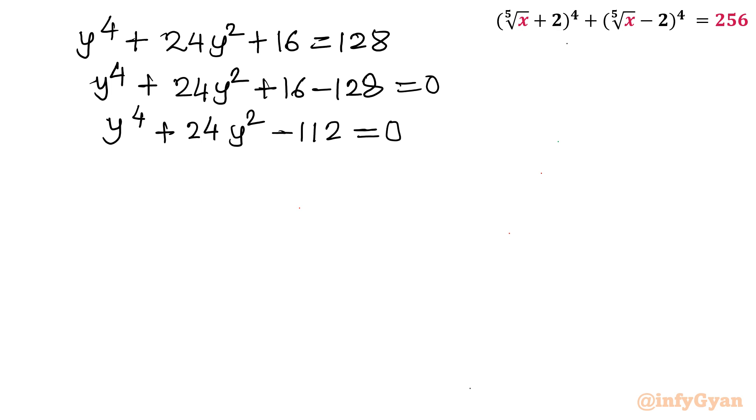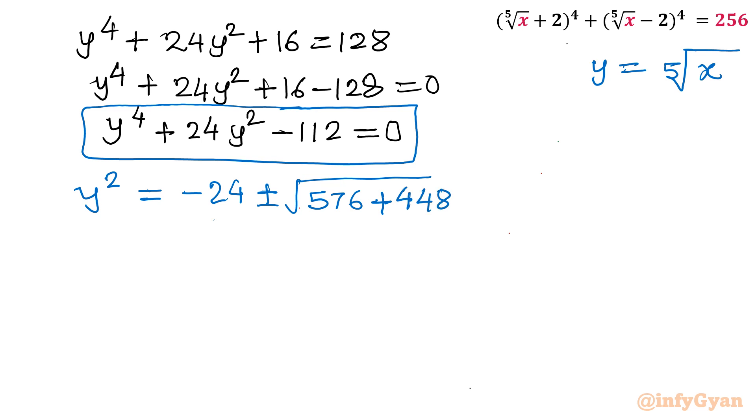Now this is quadratic equation in y square. So y square will be equal to, remember our substitution was y is equal to fifth root of x. Let's apply Shidharacharya formula: minus 24 plus minus square root of 24 square which is 576 plus 4 times 112 which is 448 divided by 2.